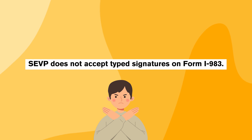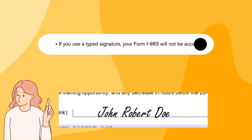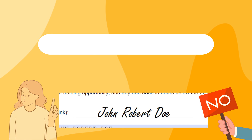SEVP does not accept typed signatures on Form I-983. If you use a typed signature, your Form I-983 will not be accepted.